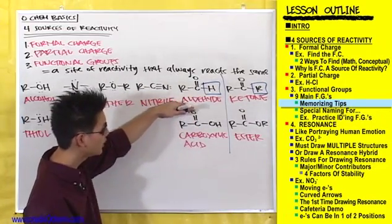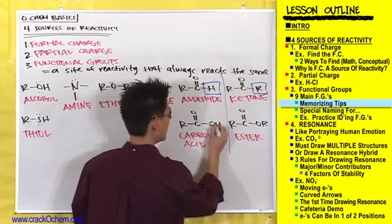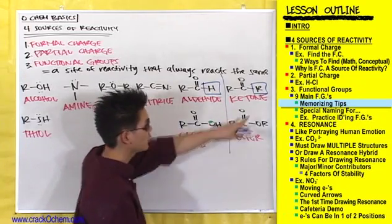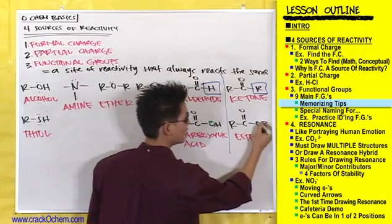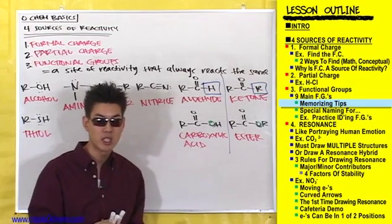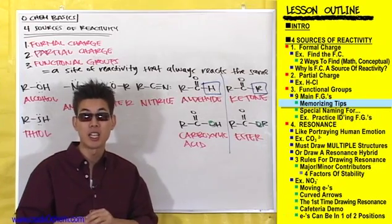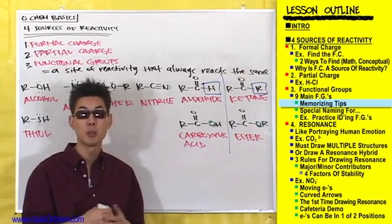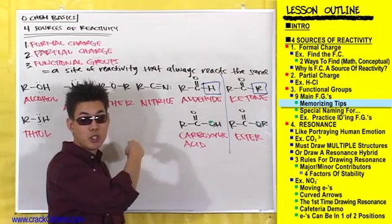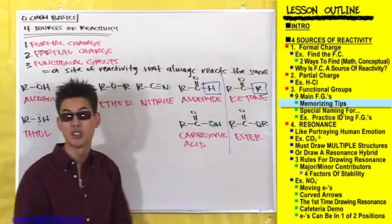The only difference between an aldehyde and a carboxylic acid is that there's an oxygen in the middle between the carbon and the hydrogen. Same thing for a ketone — the only difference between a ketone and an ester is that there's an oxygen between the carbon and the alkyl group. Your professor will likely give you a big compound with a bunch of functional groups in it, and you'll have to circle the individual functional groups and name them — that's a nitrile, that's an aldehyde, that's a ketone, et cetera.